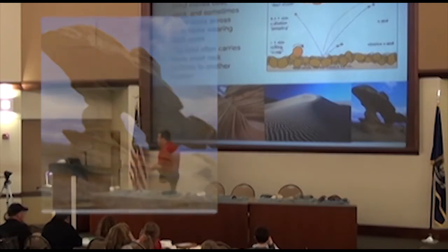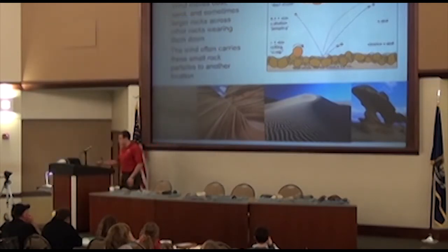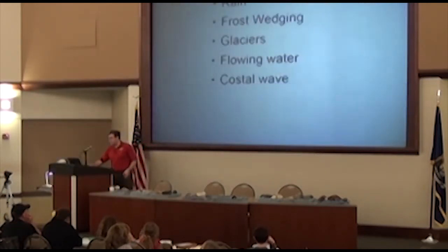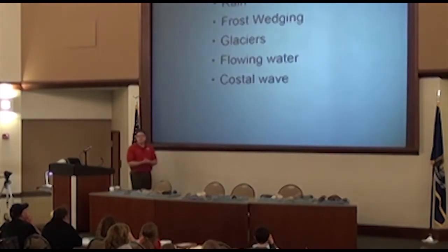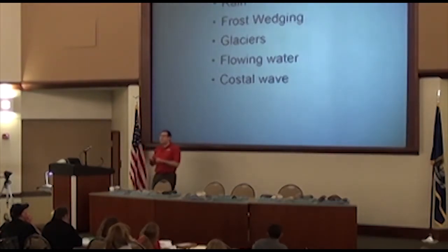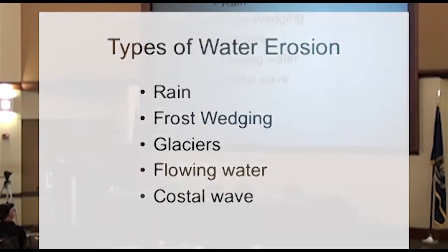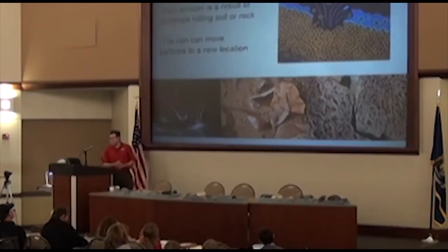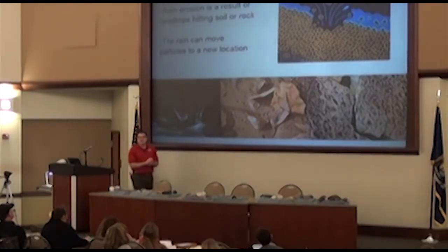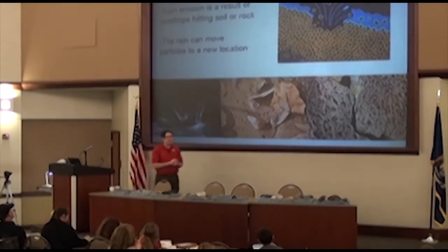Wind erosion is one type of erosion. Pretty much the rest have to do with water. We're going to talk about rain, the effects of frost wedging, which is like ice, glaciers, flowing water, and coastal wave erosion. The first one we're going to talk about is rain.